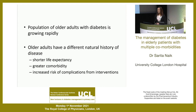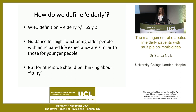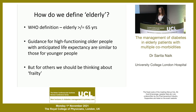The population of older adults with diabetes is growing rapidly. Older adults have a different natural history of disease — shorter life expectancy, greater comorbidity, and an increased risk of complications from interventions. The elderly is defined as over 65, though guidance for high-functioning older people with anticipated good life expectancy should be similar to younger people. For others, frailty is often a better framework to think about.